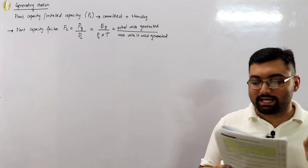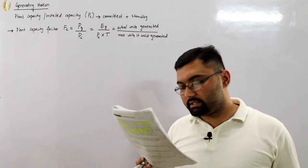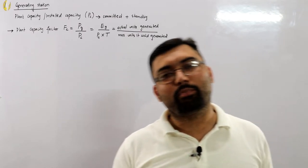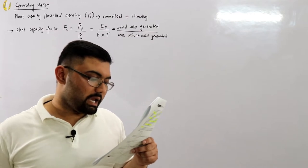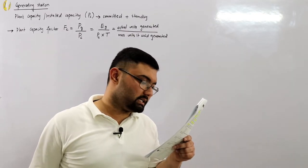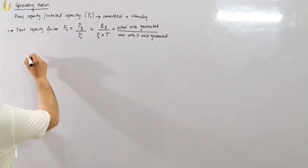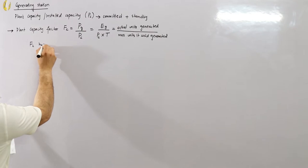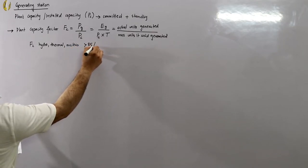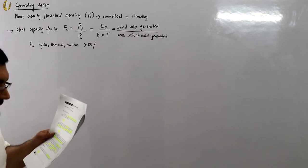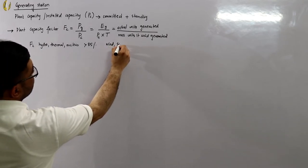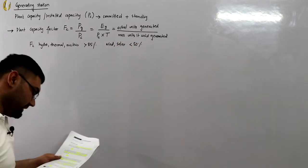The plant capacity factor is also used to express the average percentage of full capacity. For instance, if a plant is operating at 60% of its full capacity, it has a plant capacity factor of 0.6. For conventional hydro, nuclear, or coal-fired power plants, FC is in many cases greater than 85%, whereas for wind or solar power plants it is typically less than 50%.